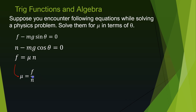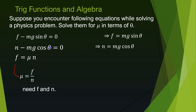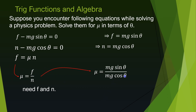That equation becomes mu = f/n. We find f from the first equation by moving the −mg sinθ term, giving f = mg sinθ. The second equation gives n = mg cosθ. Substituting, mu = mg sinθ divided by mg cosθ. The mg cancels, leaving mu = sinθ over cosθ.